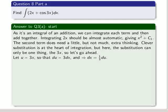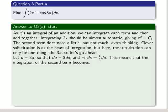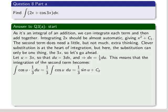So let's go ahead. Let u equal 3x, so that du equals 3 times dx, and that implies that dx equals a third du. This means that the integration of the second term, the second term now, becomes the integration of cos u multiplied by a third du. We can pull the third out there and integrate cos u, which is sine u.